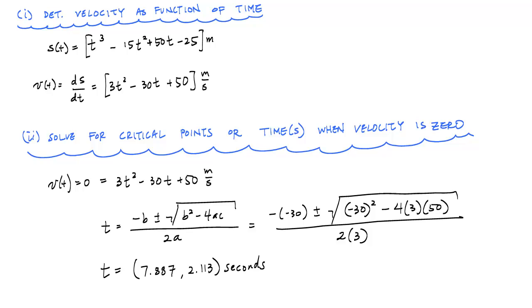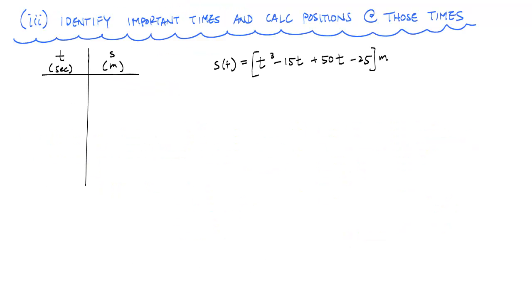The next thing for us to do is determine which times are important and figure out the position of the particle at those times so that we can calculate the difference or the distance traveled within each of those time periods. Those important times are when it starts at t equals zero, and the points where it changes direction at 2.113 seconds and 7.887 seconds. And then where is the particle when we want to find out where it ends, at 10 seconds.